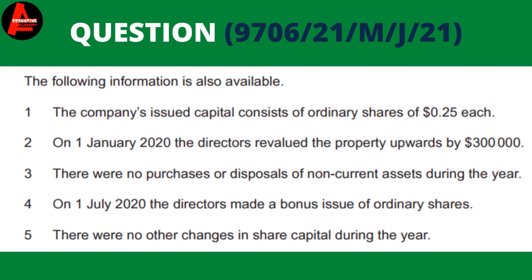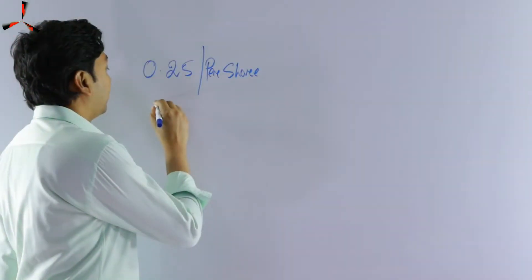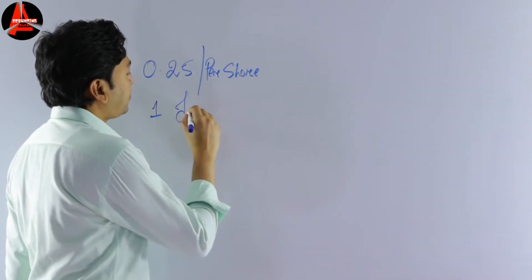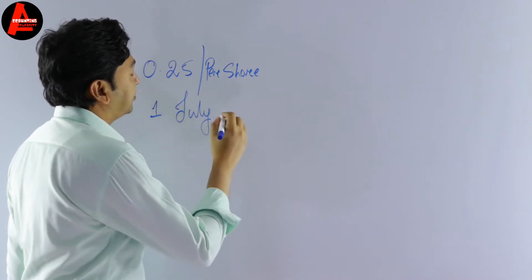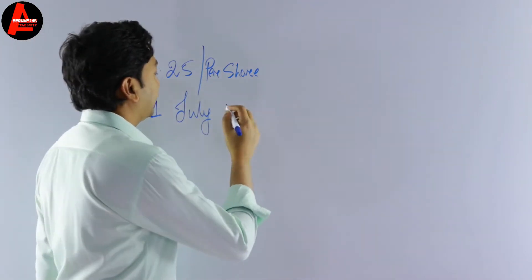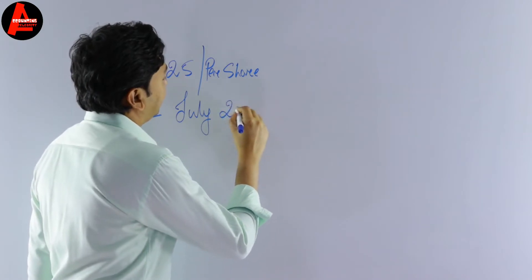Number two: on 1st July 2020, the directors revalued the property upwards by $300,000. Number three: there were no purchases of this property. Number four: on 1st July 2020, the directors made a bonus share issue on ordinary shares — so on 1st July 2020 the directors decided to issue bonus shares. Number five: there were no other changes in share capital during the year.